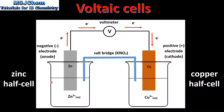A Voltaic Cell is made of two half cells. On the left we have a Zinc half cell, on the right we have a Copper half cell. The Zinc half cell is composed of a Zinc electrode in a solution of Zinc 2+ ions. The Copper half cell is composed of a Copper electrode in a solution of Copper 2+ ions.